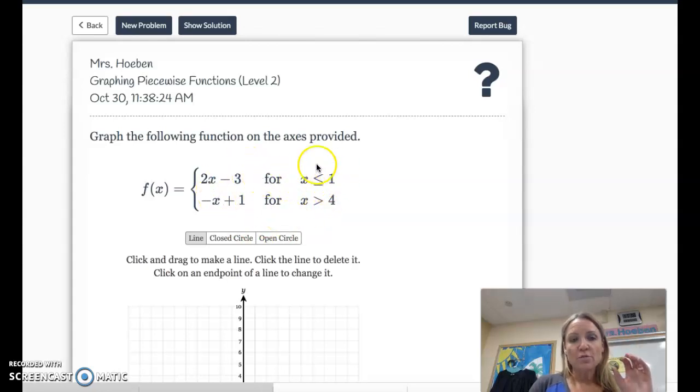So when x is less than or equal to 1, we're going to graph the line y equals 2x minus 3. And when x is greater than 4, we're going to graph the line y equals negative x plus 1. Alright.